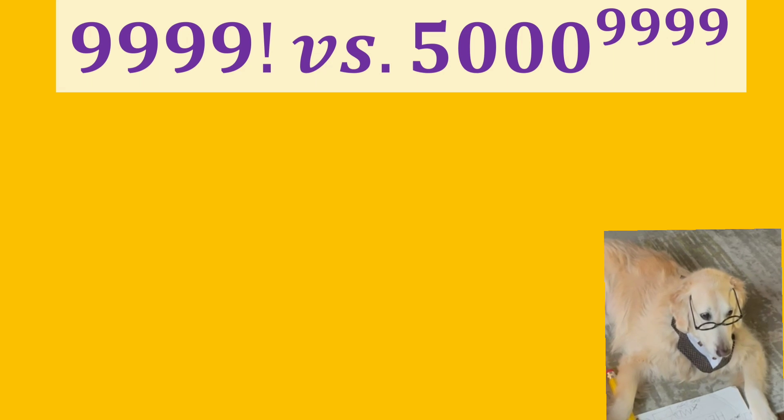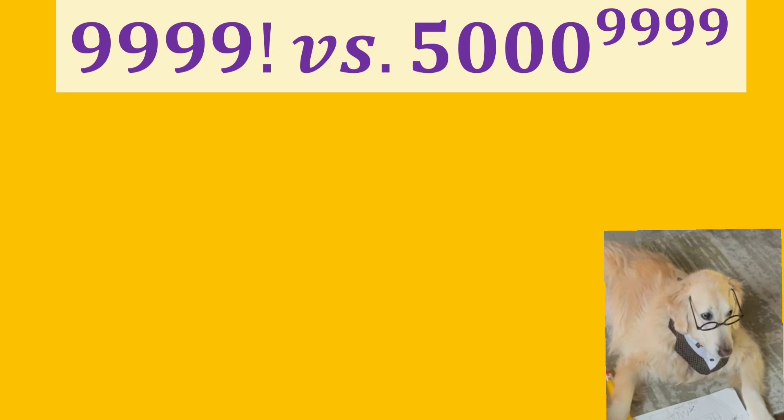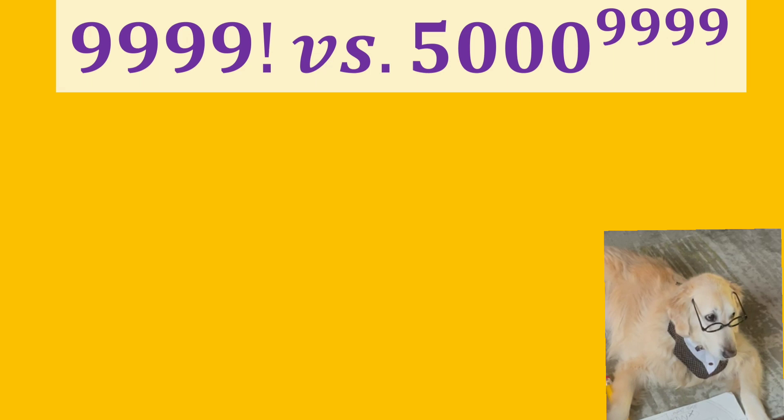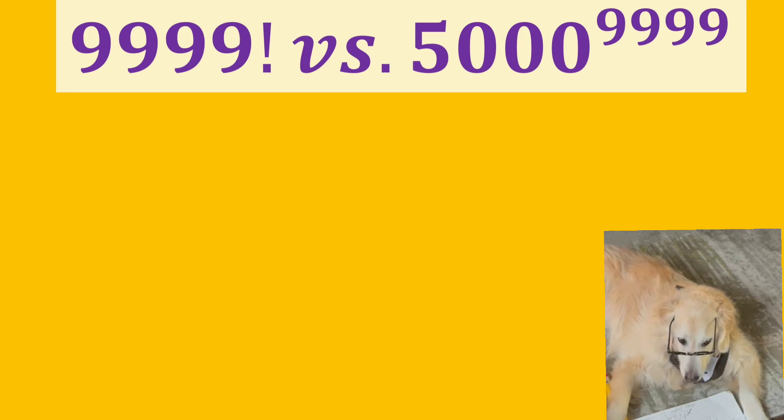Today we will compare two very big numbers with each other. 9999 factorial versus 5000 to the power of 9999. It looks scary, right? Let's start to see if it is really scary.